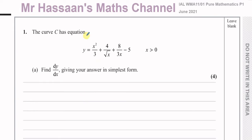Question number one says the curve C has equation Y equals X squared over 3, plus 4 over the square root of X, plus 8 over 3X, minus 5, where X is greater than 0. Part A says find dy/dx, giving your answer in its simplest form. So we have to differentiate this and find the first differential of this equation.